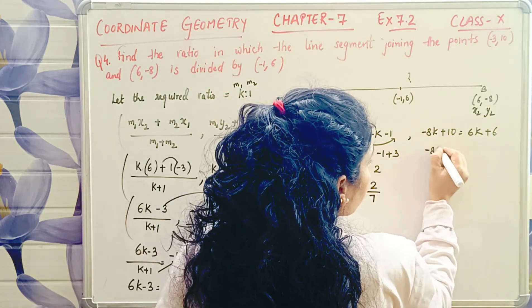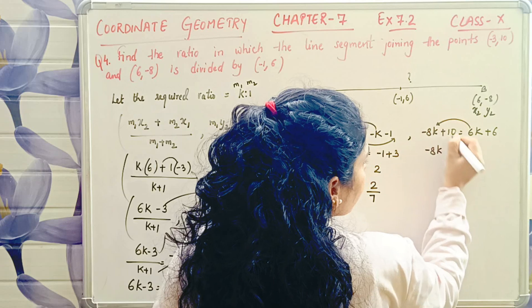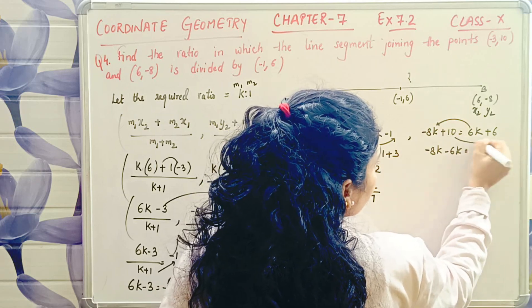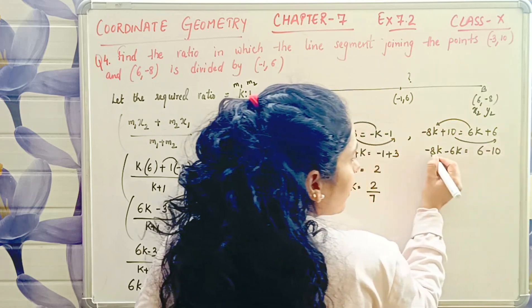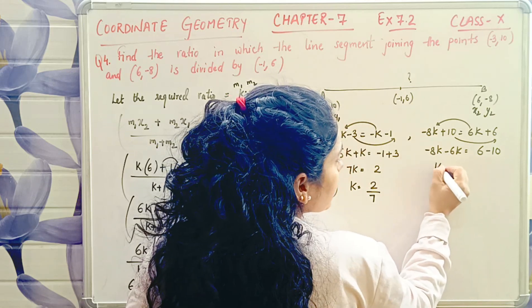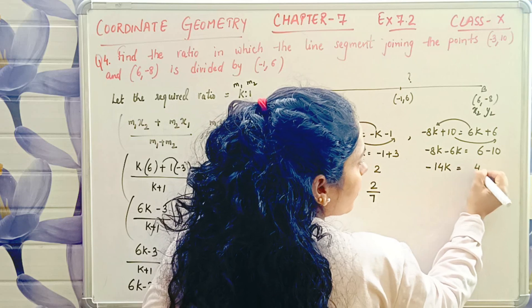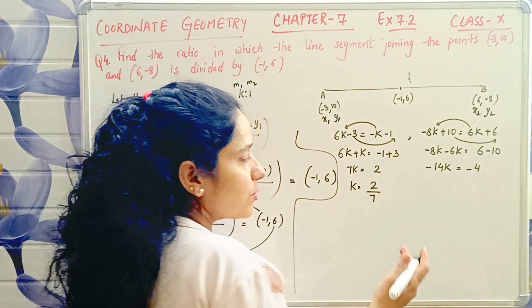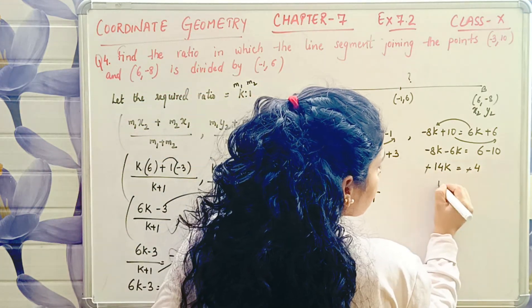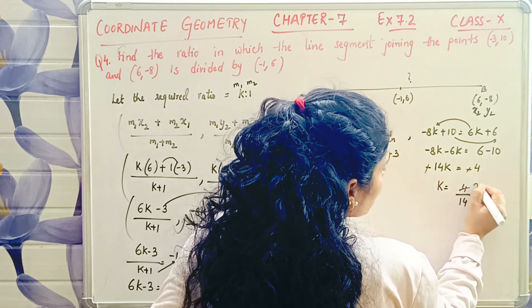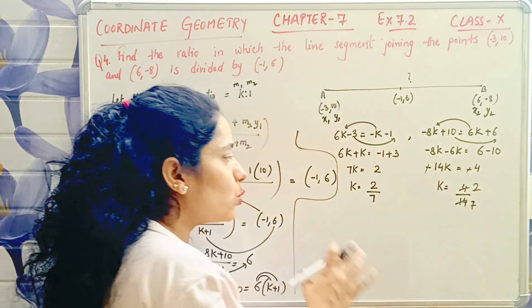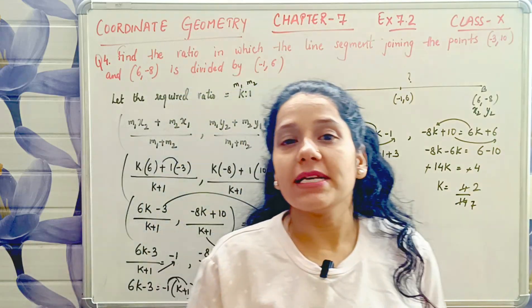Similarly, -8k plus 6k, this k comes here, minus 6k. 6 plus 10 goes there, -10. Minus minus is plus. 8 and 6 is 14k. Larger digit's sign. 10 minus 6 is 4. Larger digit's sign. Minus minus cancel. k equals 4 by 14, which is 2 by 7. From both methods, k equals 2 by 7.